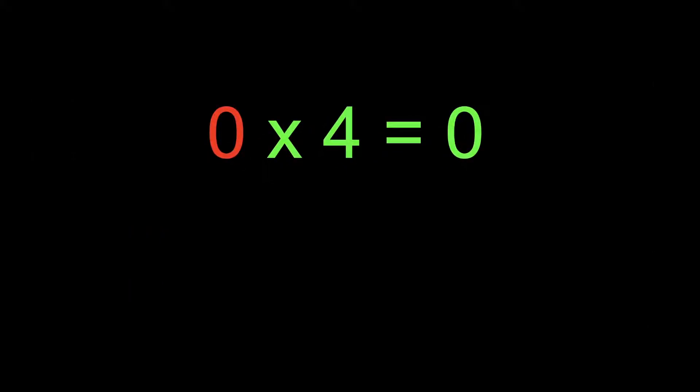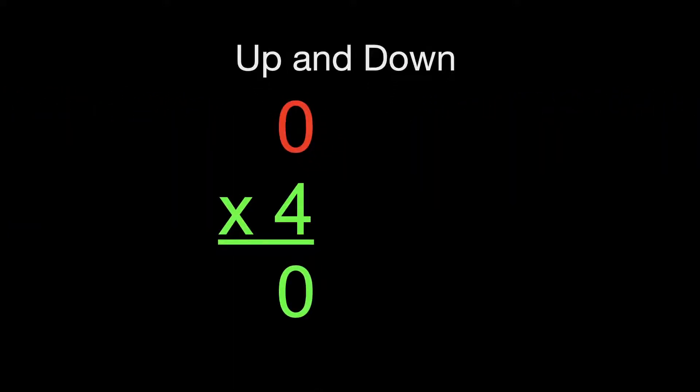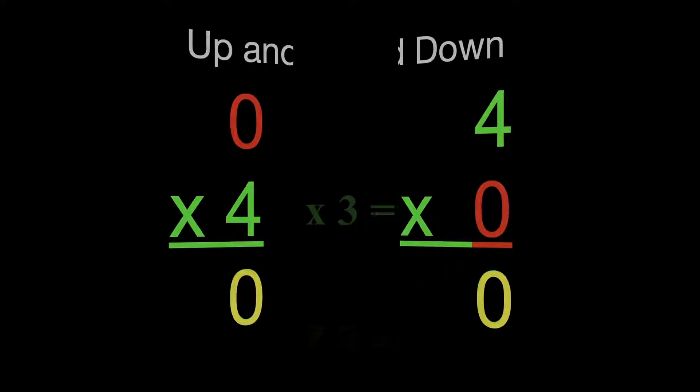The numbers that you multiply, for example 0 times 4, are called factors. The answer in this case of 0 is called the product. You can switch the factors around and you will still get the same product. You can also multiply going up and down. For example, 0 times 4 equals 0, you can change the order and you're still going to get the same answer of 0.